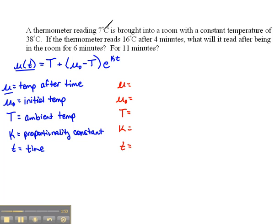A thermometer reading 7 degrees Celsius is brought into a room. 7 degrees Celsius is that initial temperature of this thermometer. It's brought into a room with a constant temperature of 38 degrees Celsius, so 38 degrees is the ambient temperature or the surrounding medium. If the thermometer reads 16 degrees Celsius after 4 minutes, so 16 is going to be its final temperature after a time of 4 minutes. The only thing we don't have listed out here is our proportionality constant, but we have enough information to be able to solve for that.